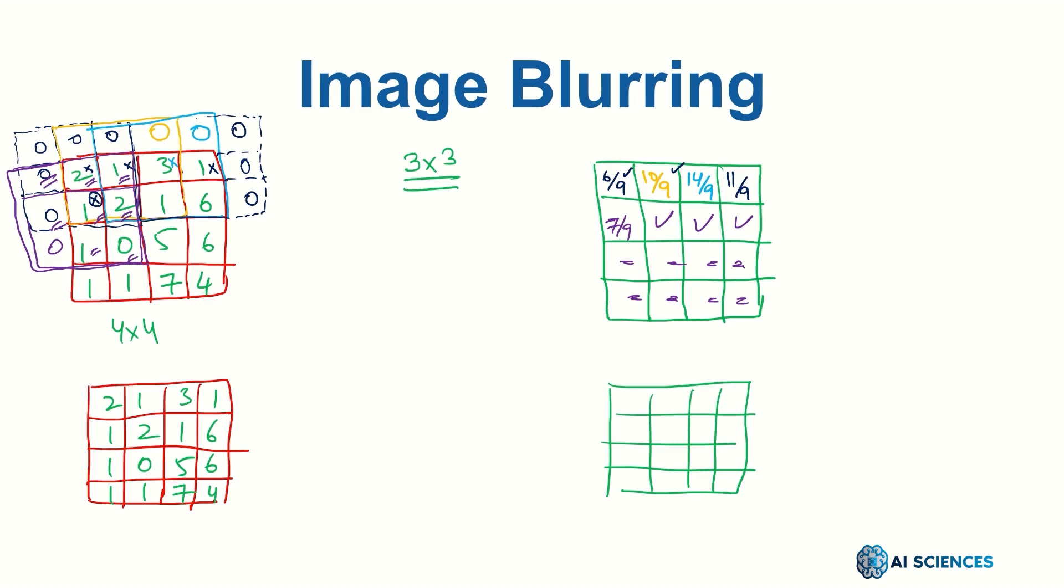But now rather than thinking of this 3x3 window, we actually design a 3x3 window - we actually write a 3x3 window and place some numbers in that window. This window is also called a mask or sometimes called a filter. Let me place the numbers 1/9, and I will show shortly why I'm placing this number 1/9 everywhere. So this is a 3x3 matrix with all the numbers as 1/9.